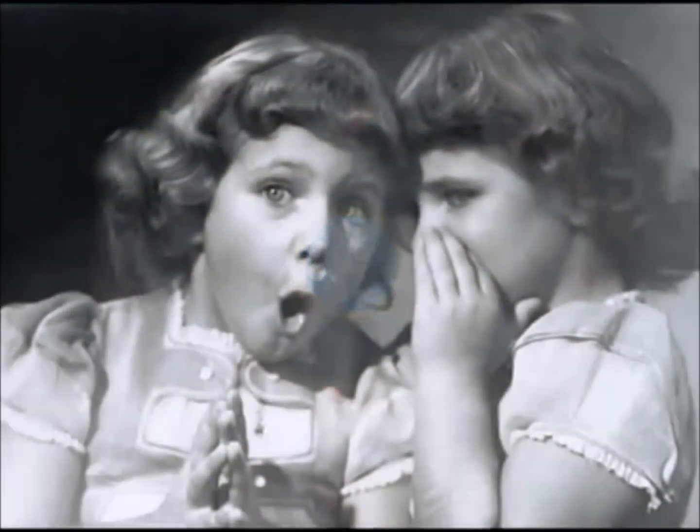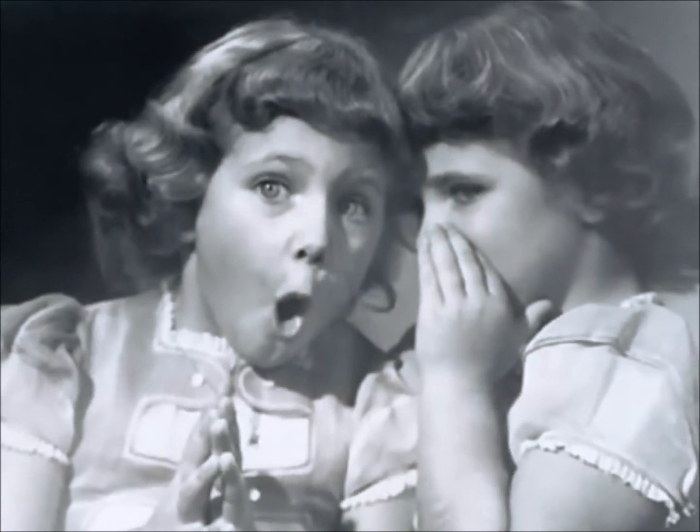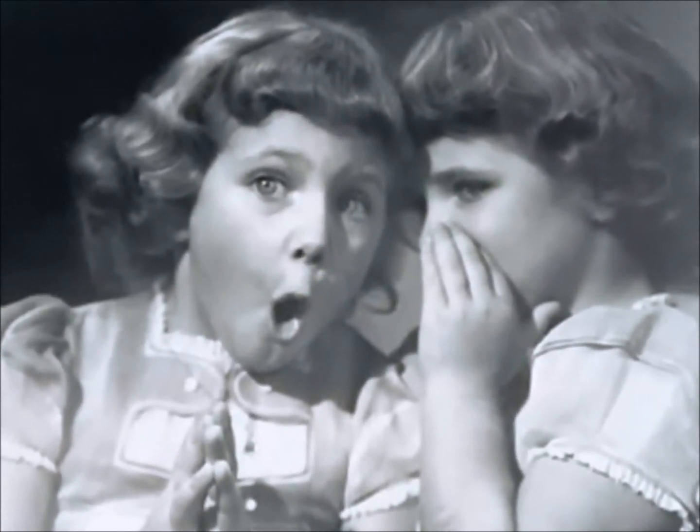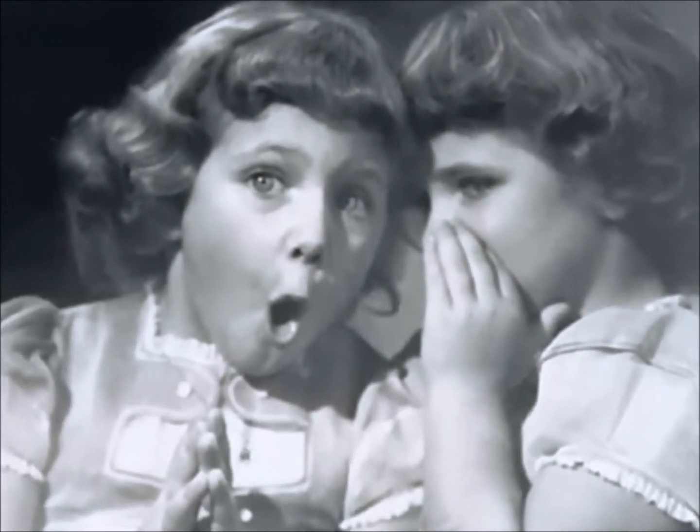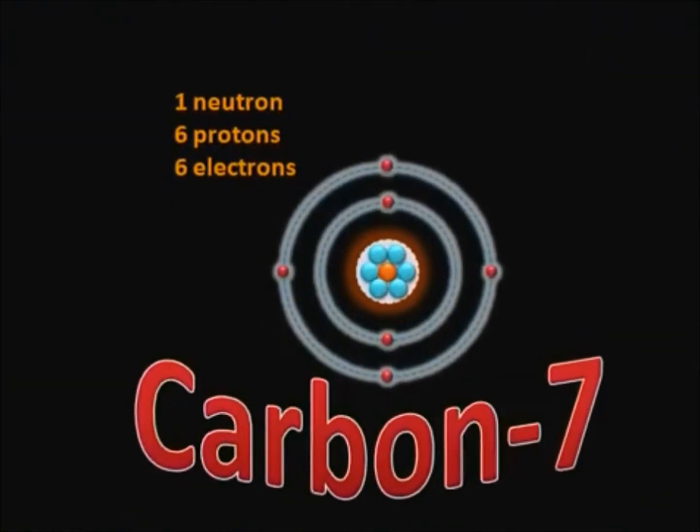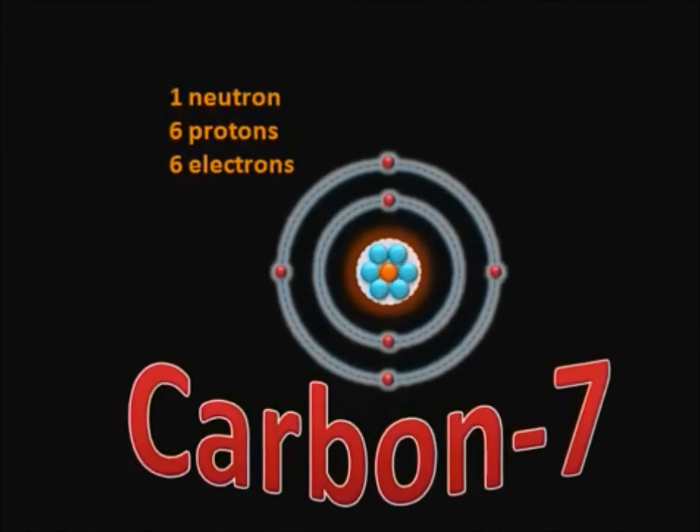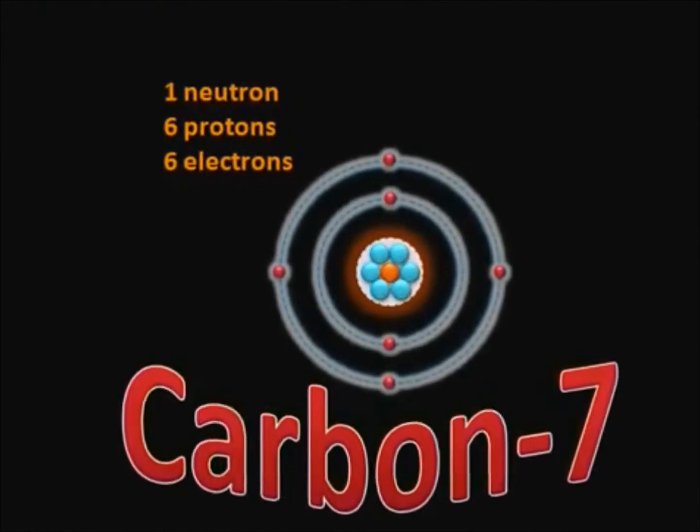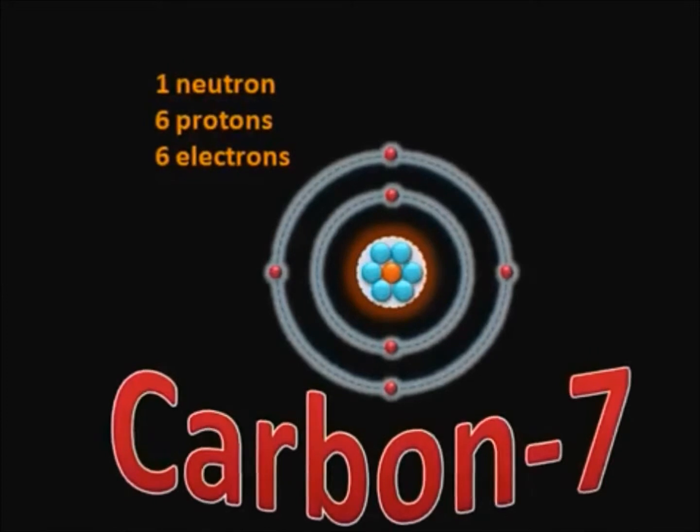Every secret has a time. A time to reveal. A time to celebrate. It is now time to reveal the secret of all secret of carbon-7. Carbon-7 is the hitherto undiscovered isotope of carbon, which has six electrons, six protons and only one neutron.